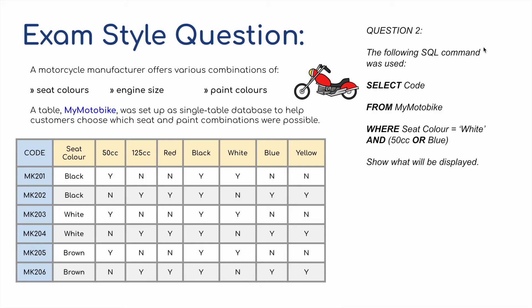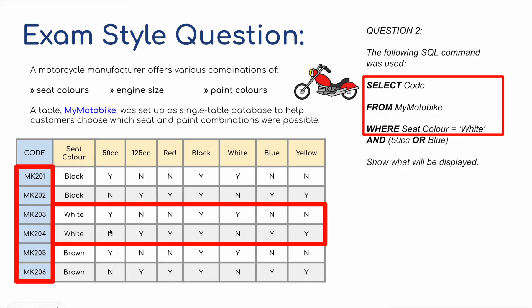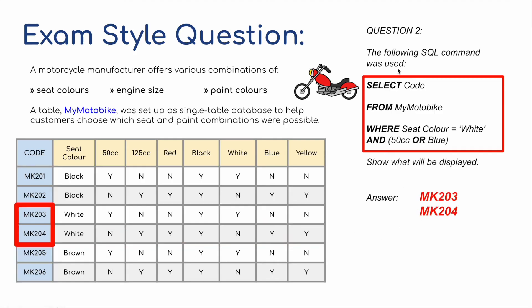Question two: the following SQL command was used — SELECT code FROM motorbike WHERE seatcolour equals white AND 50cc equals yes OR blue equals yes. We select the code column from mymotorbike where seat colour is white. Then additionally the 50cc or blue condition must be met. Looking at the table, both MK203 and MK204 satisfy those conditions, so the only things displayed would be MK203 and MK204.